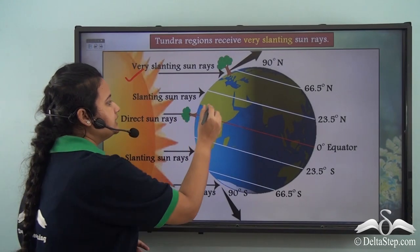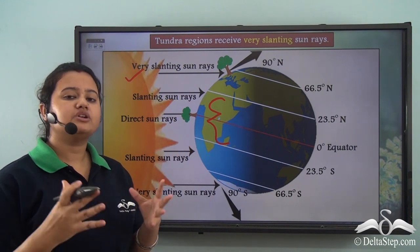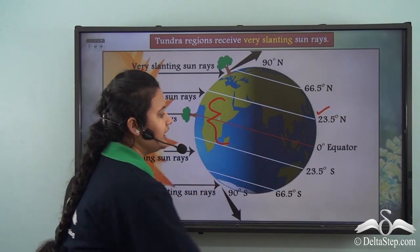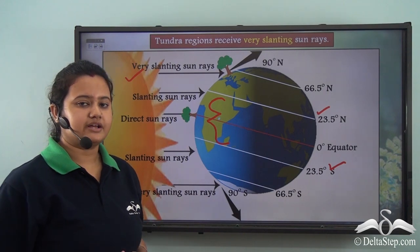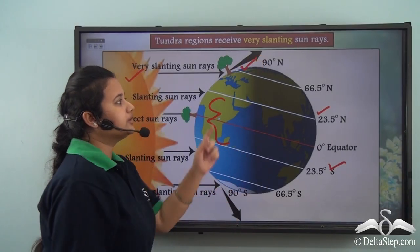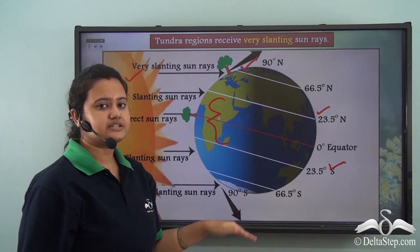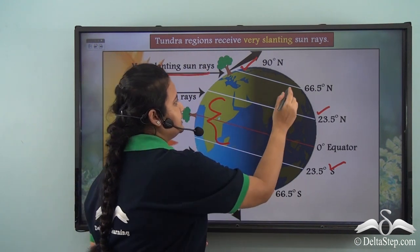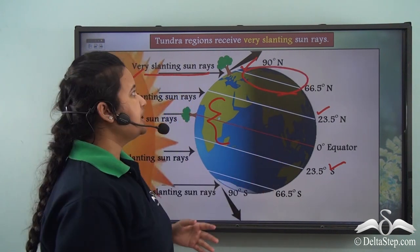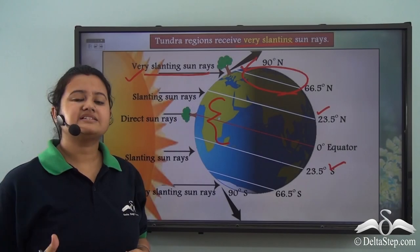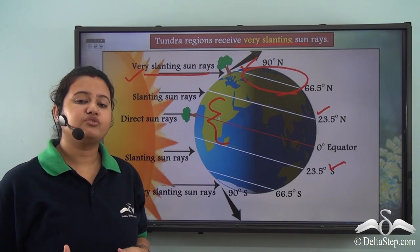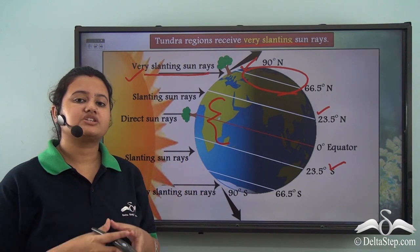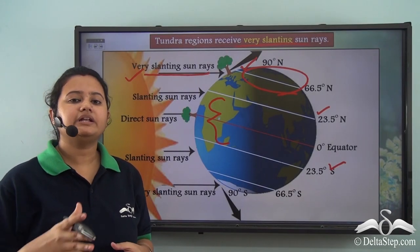Only the torrid zone receives direct or perpendicular rays of the sun, while the regions beyond both the tropics — the Tropic of Cancer and Tropic of Capricorn — receive slanting rays. The part of the world beyond the temperate zone, that is beyond the Arctic Circle and Antarctic Circle, receives very slanting rays of the sun. Since Tundra region lies beyond the Arctic Circle, the sun's rays are very much inclined and therefore faint and less intense, resulting in low mean temperature.